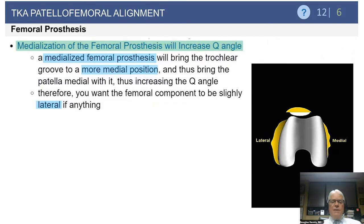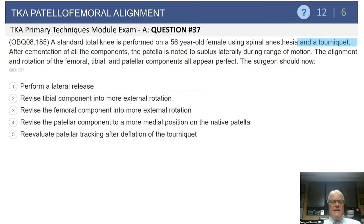Medialization of the femoral component will similarly increase the Q angle, making patellofemoral capture more difficult. Therefore, if your femoral component width is a bit wider than the chosen femoral component diameter, it is usually wise to move the femoral component two or three millimeters laterally, as it will make patellofemoral tracking easier to obtain.